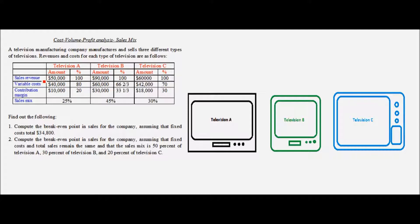For television A, the sales revenue is $50,000. For television B, the sales revenue is $90,000. And for television C, the sales revenue is $60,000. The variable cost for television A is $40,000. The variable cost for television B is $60,000. And the variable cost for television C is $42,000.